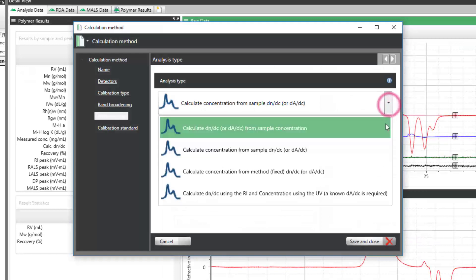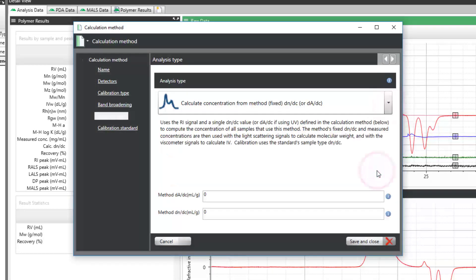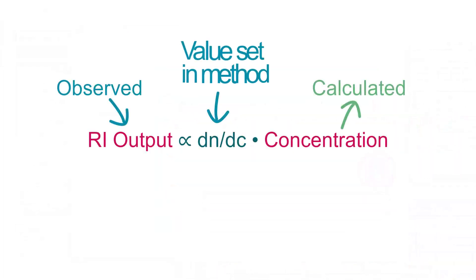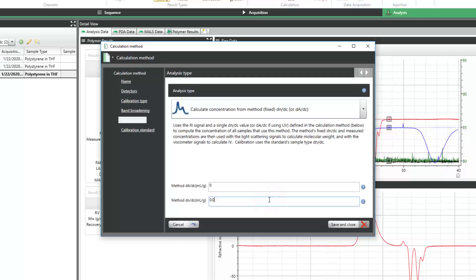The third, Calculate Concentration from Method or Fixed DNDC, is similar to the previous analysis type in that it uses a known DNDC value. But in this case, the DNDC value is set in the method and the same value is applied to all samples analyzed with that method.